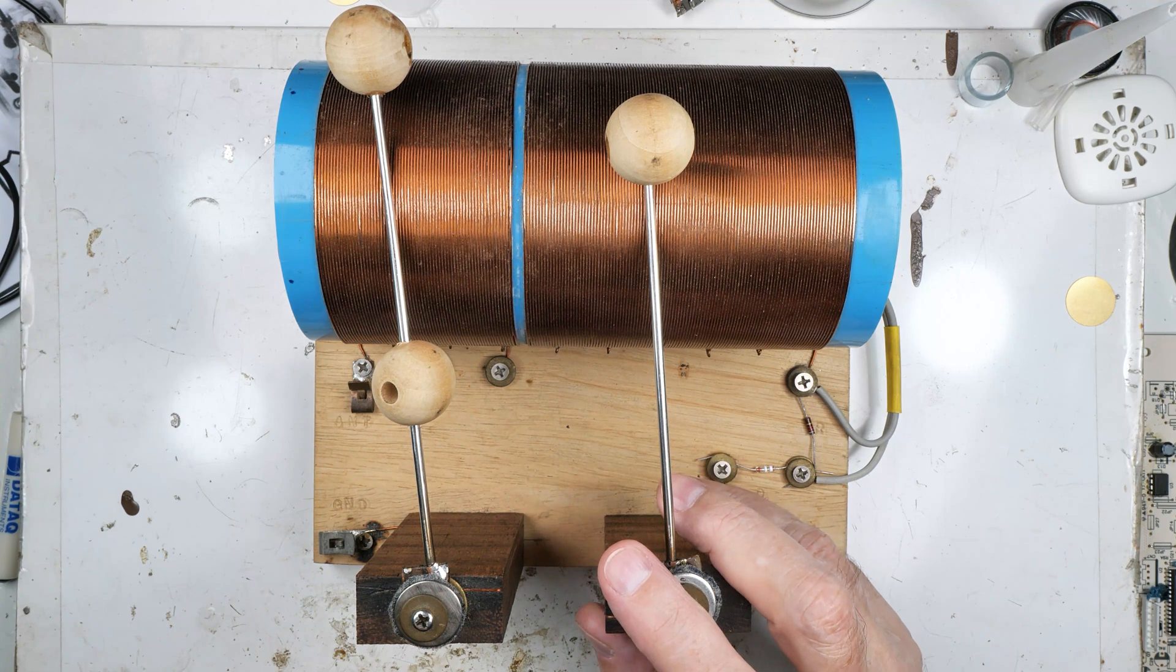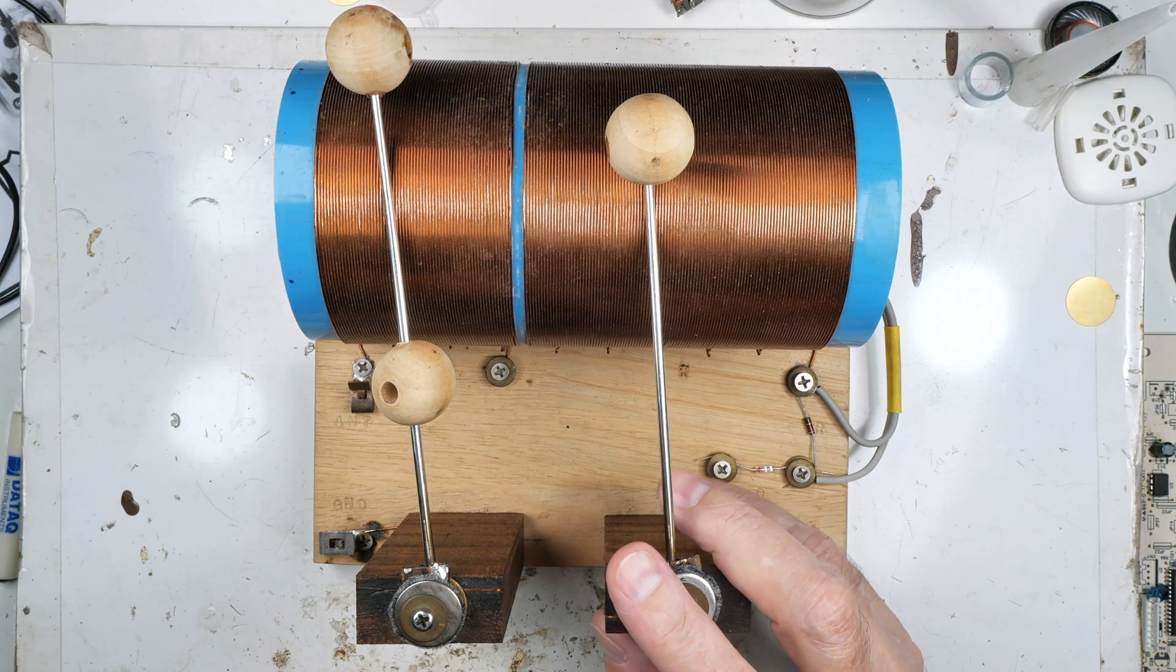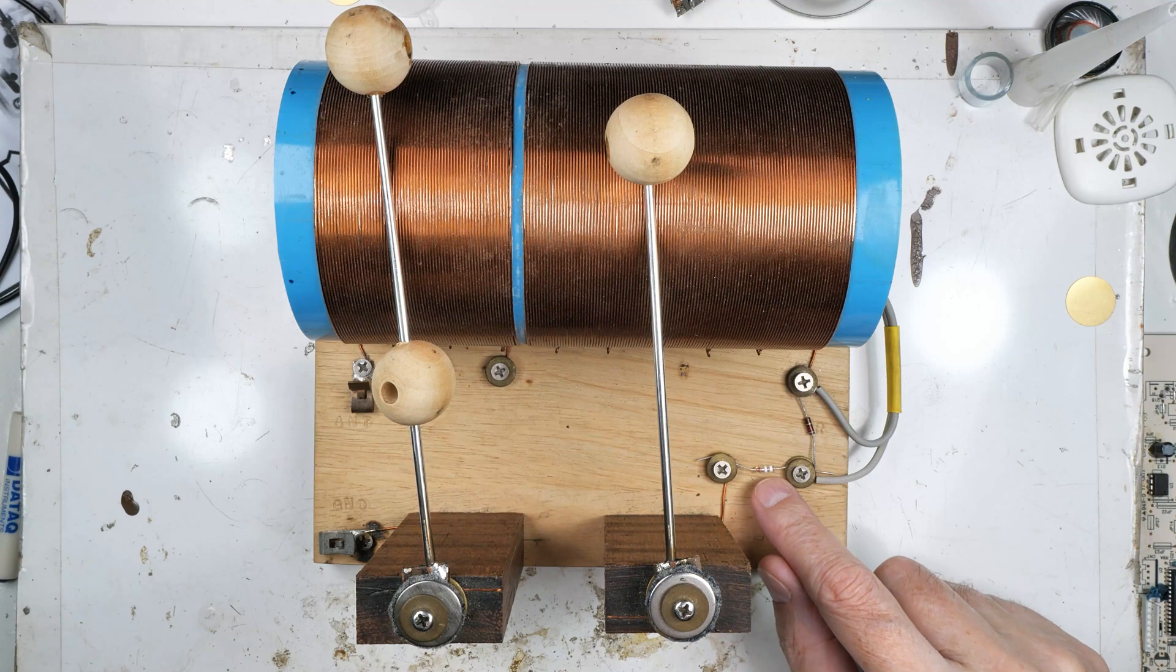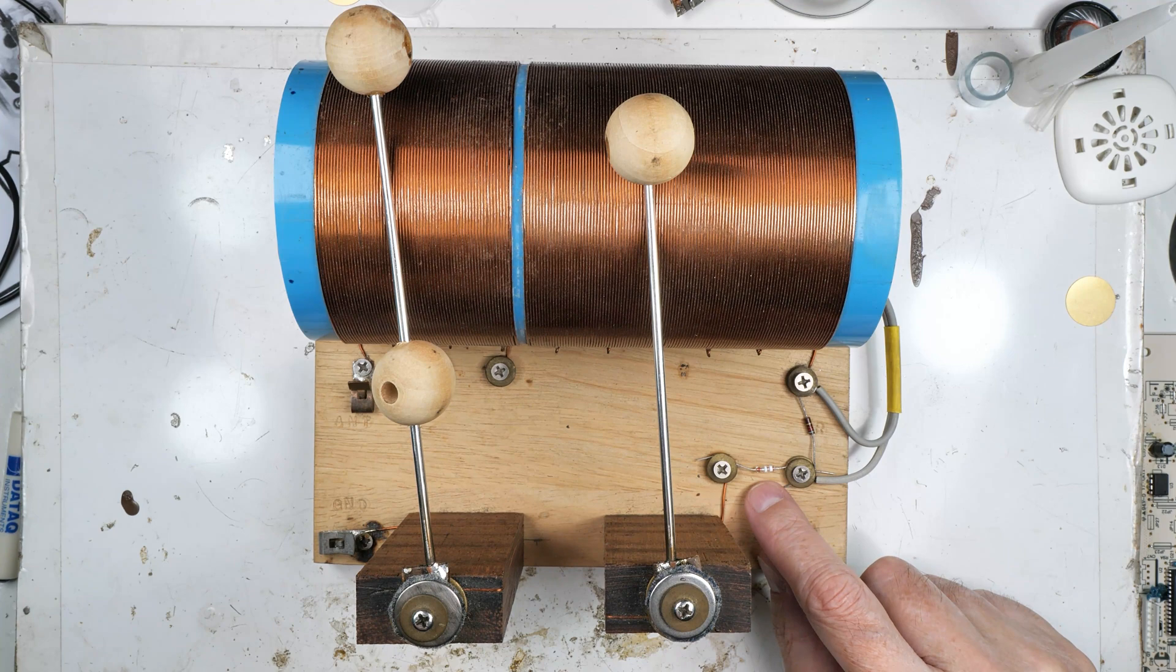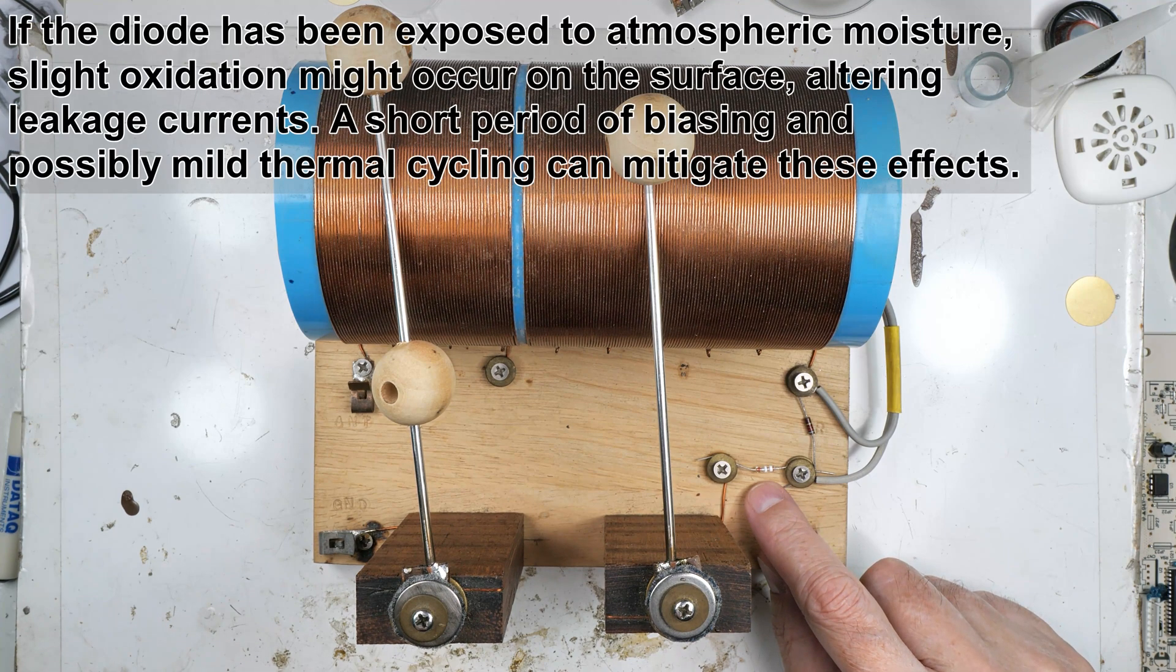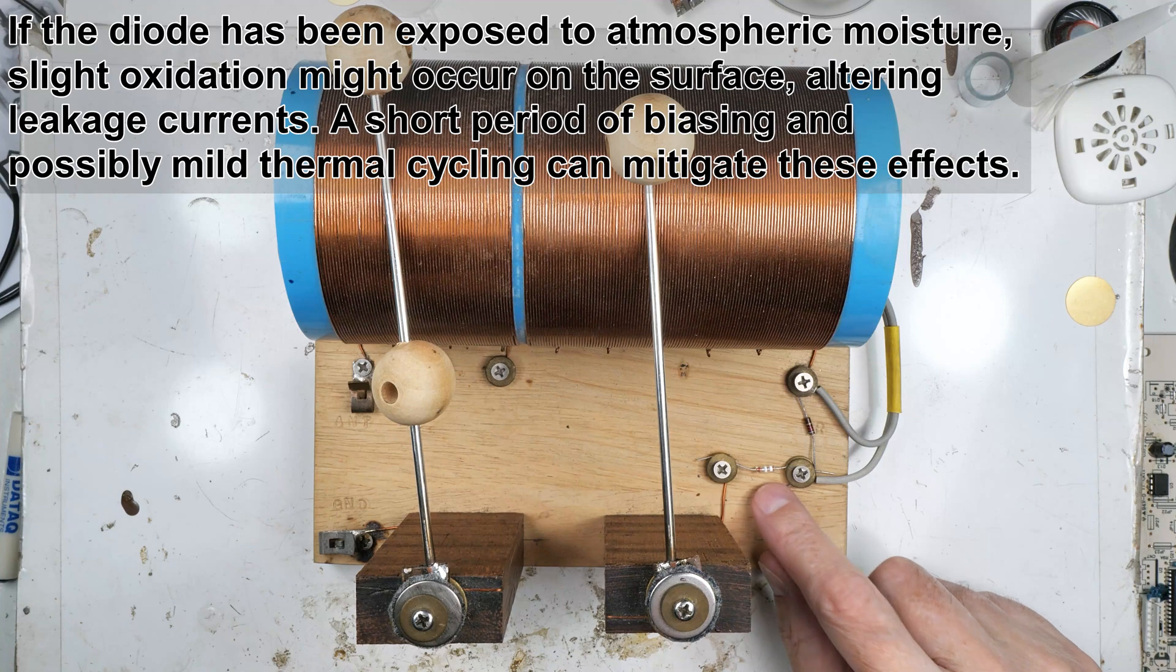What was the other thing I found? Oxidation and surface degradation. Well, this is inside of a glass envelope, so I'm not quite sure how that would happen. But it says if it's been exposed to atmospheric moisture, well yeah, glass actually will absorb water. So I guess it could happen.